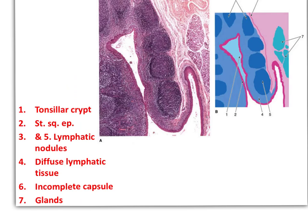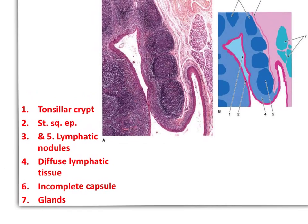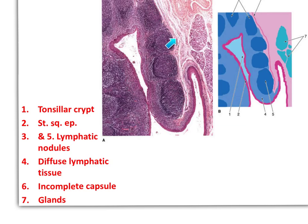You can see here the non-keratinized stratified squamous epithelium passing through the crypt and lining it. We have the lymphatic nodules with germinal centers, and in between we have diffuse lymphatic tissue. Here on the other side of the tonsil facing the epithelium, you have the capsule. It is not complete — it is present only at one part of the tonsil.